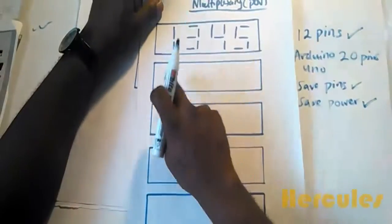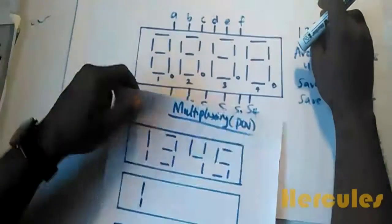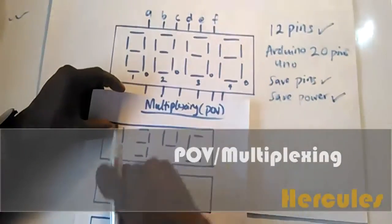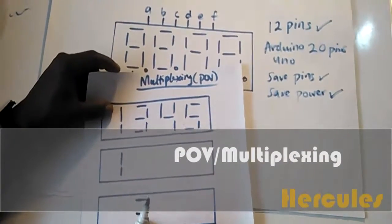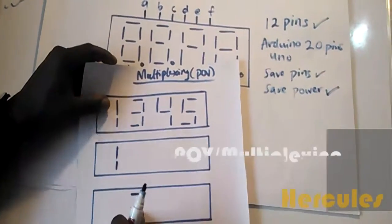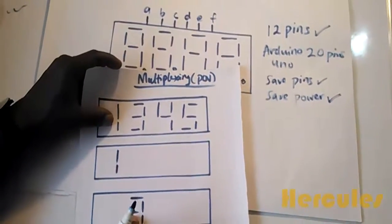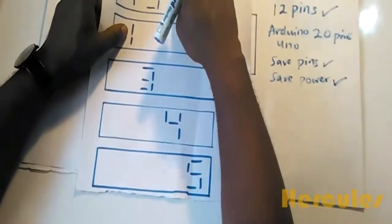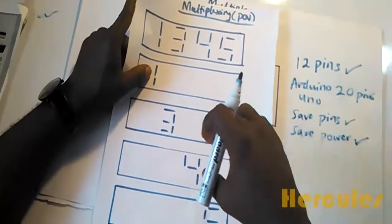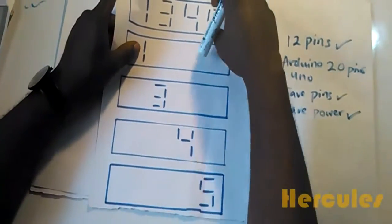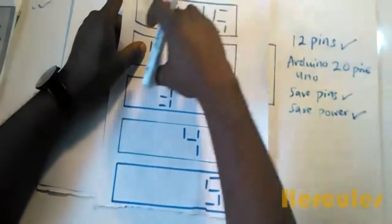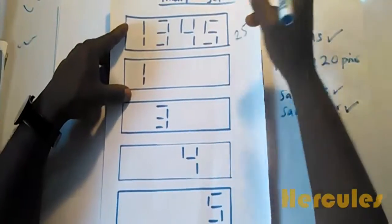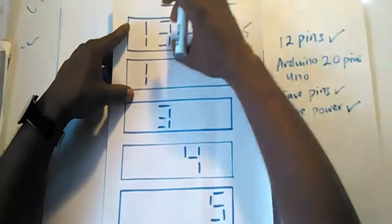We display the number 1 on the first segment for some time, then turn it off. Then we display 3 on the second segment, then 4 on the third segment, and 5 on the fourth segment. We repeat this continuously 25 to 30 times per second. The effect is that we see 1, 3, 4, 5 displayed simultaneously.